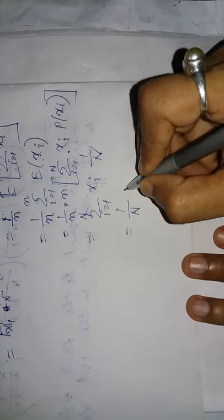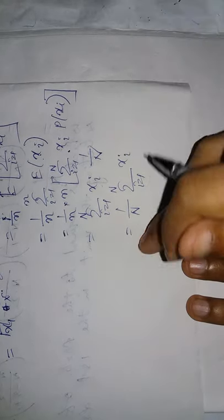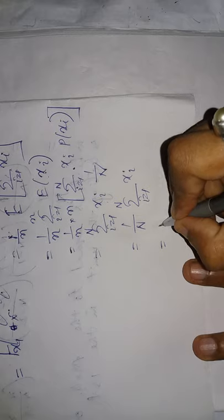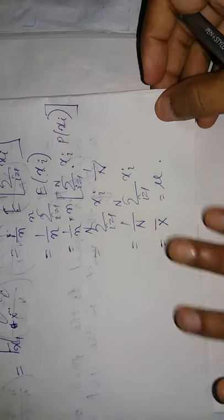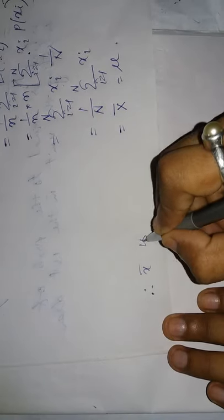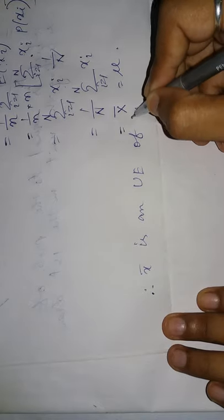1 by n is constant, so we take it outside: 1 by n times summation i from 1 to capital N of xi. This is the population mean formula we already wrote, so it equals capital X bar or mu. Therefore x bar is an unbiased estimator of capital X bar.